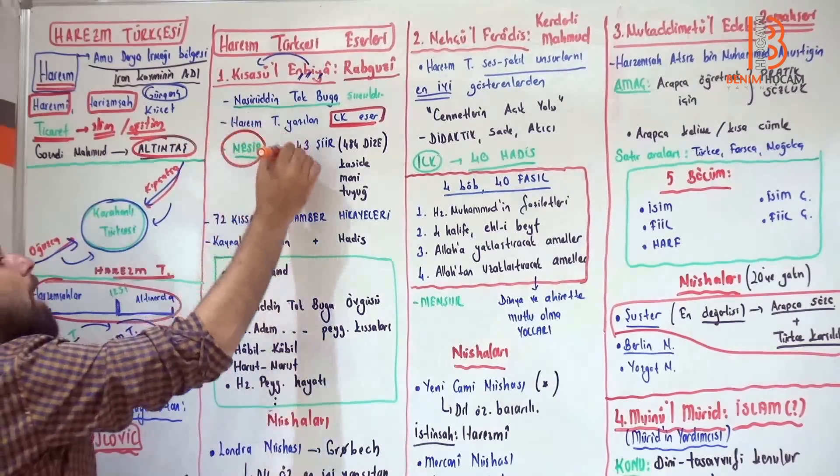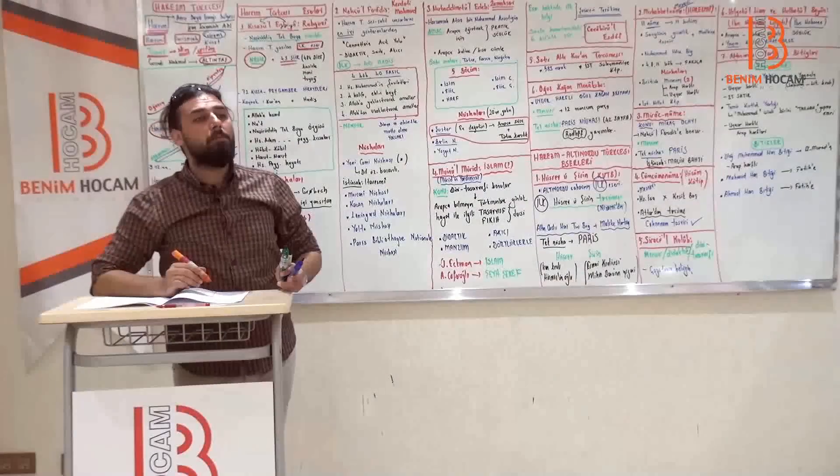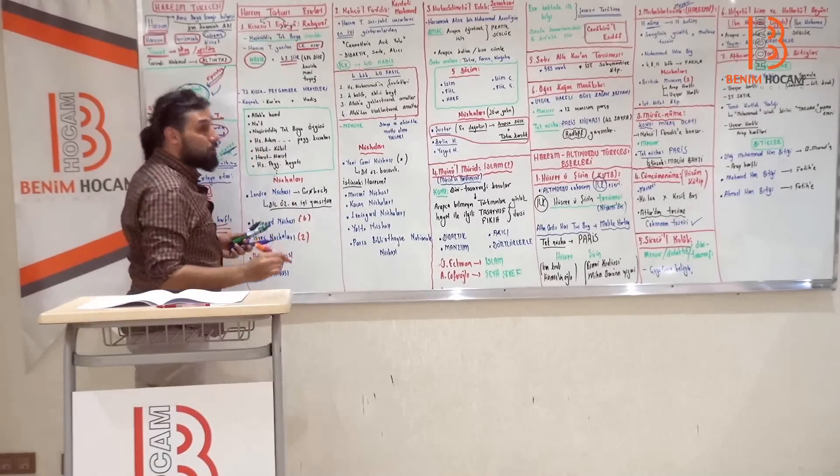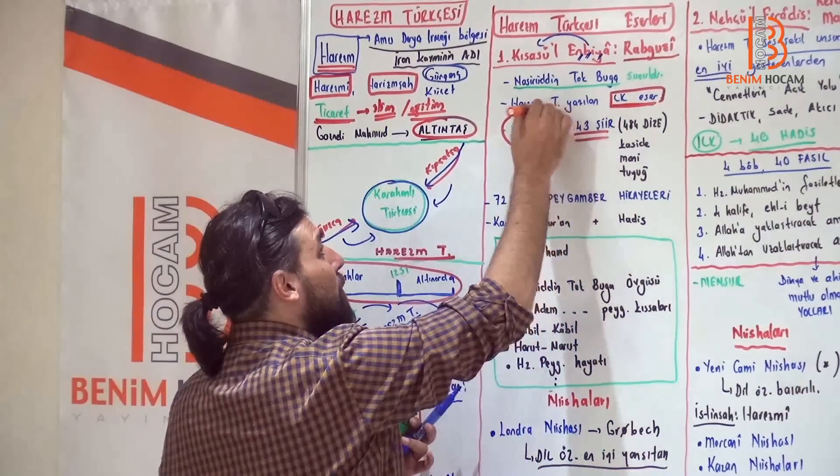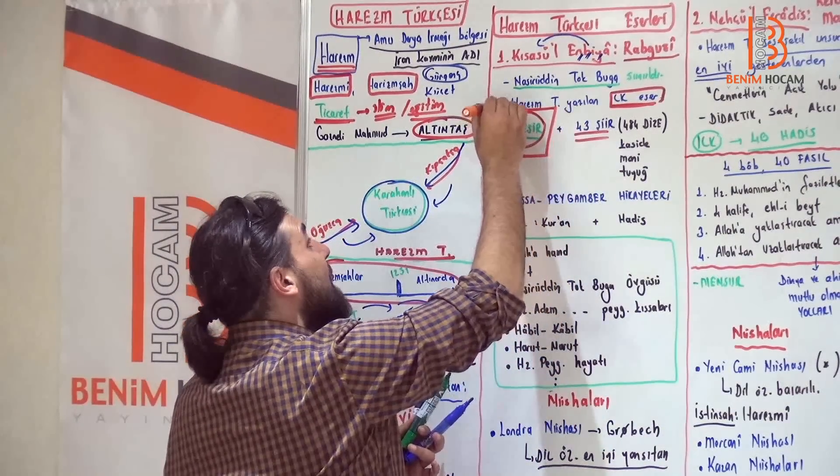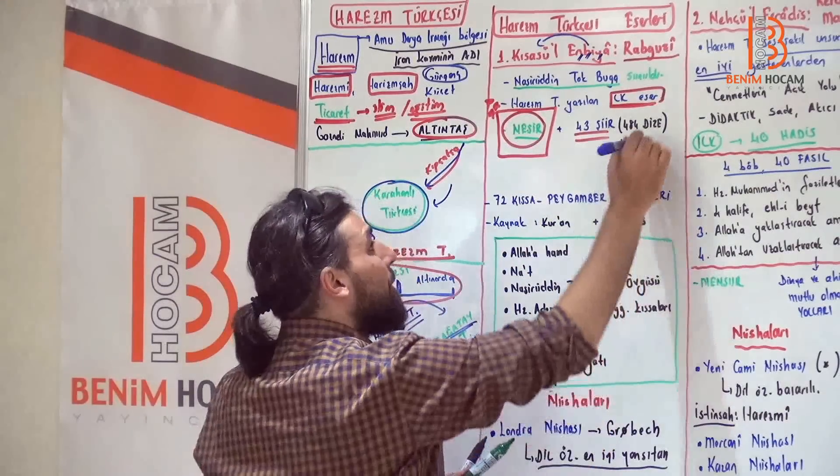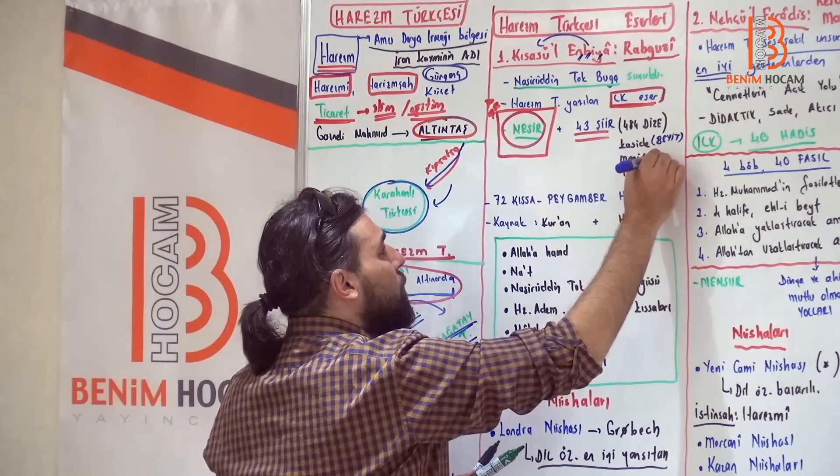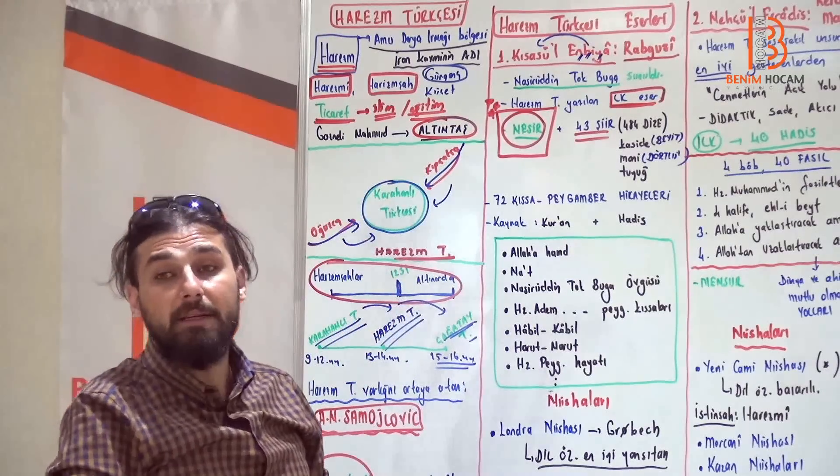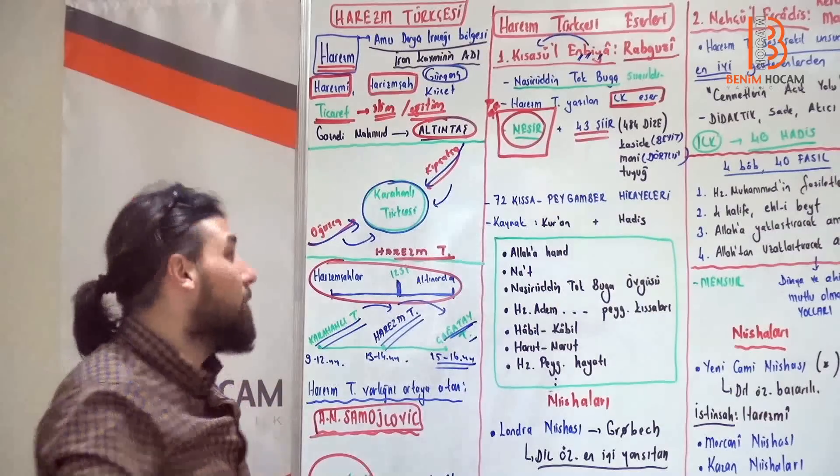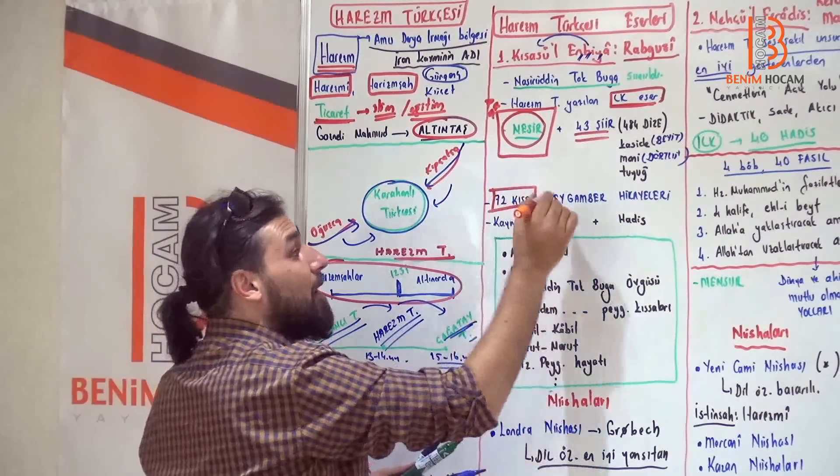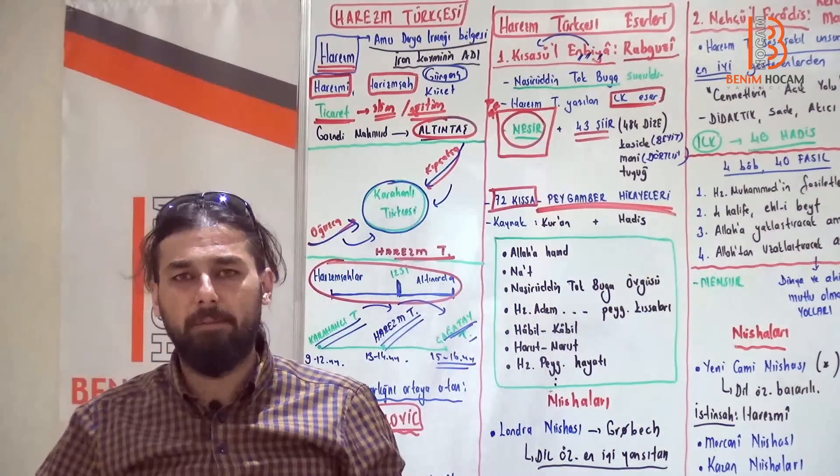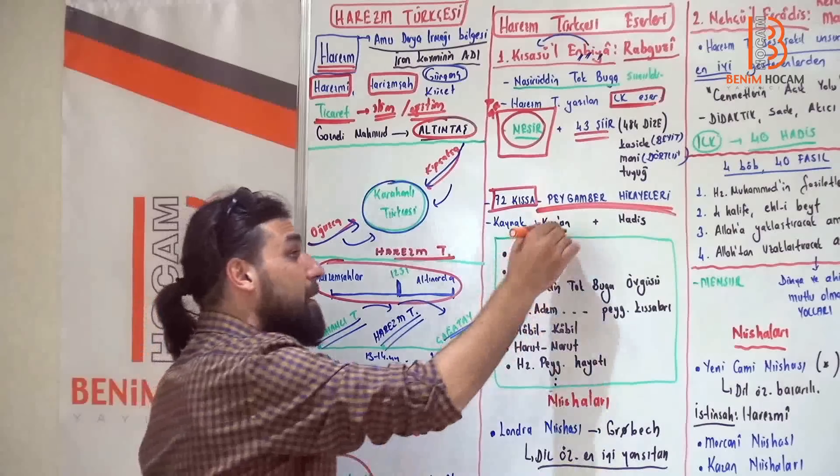Elbette Nesir'dir. Ama 43 tane kaside, mani, tuyu şeklinde arkadaşlar bölümler vardır. 43 tane şiir vardır, toplam 484 düze. Bu yüzden Nesir bölümü de, Nazım bölümü de vardır ama bu eser kuvvetle nedir arkadaşlar? Eser Nesir'dir. Kasidenin bulunması içinde beytler bulunmasını, mani bulunması da içinde dörtlüklerin bulunduğunun kanıtıdır. İçinde ne vardı? Kısa Sül Enbiya. Peygamber kıssası değil miydi? 72 adet kıssa vardır ve peygamber hikayeleri anlatılır. Kaynak, tabi ki Kur'an-ı Kerim ve biraz da hadis.